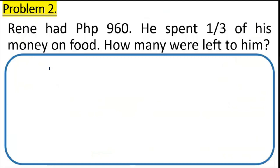Rene had 960 pesos. He spent one third of his money on food. How many were left to him? Ang pera ni Rene ay 960. Ginastos niya ay one third nito. So, ang tanong ay ilan yung natira sa kanya. Let's have multiplication first. We need to multiply 960 to one third.